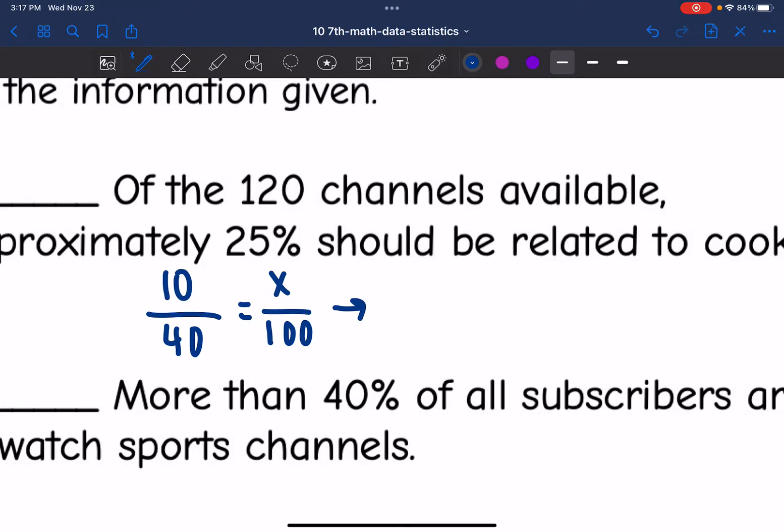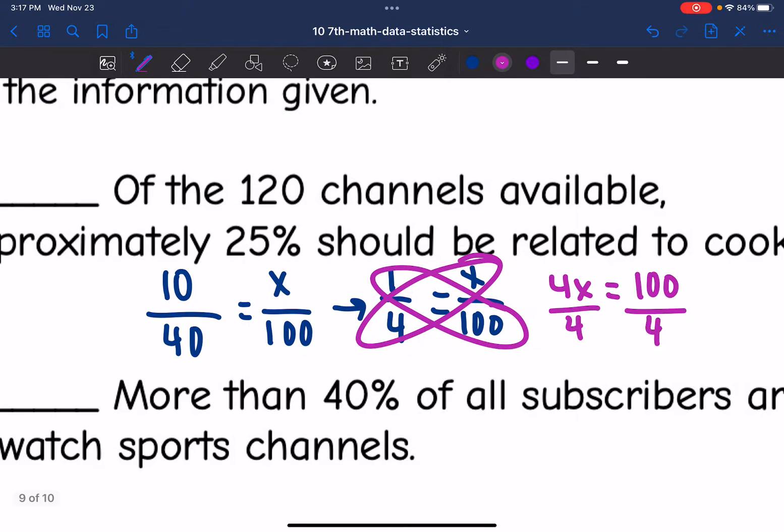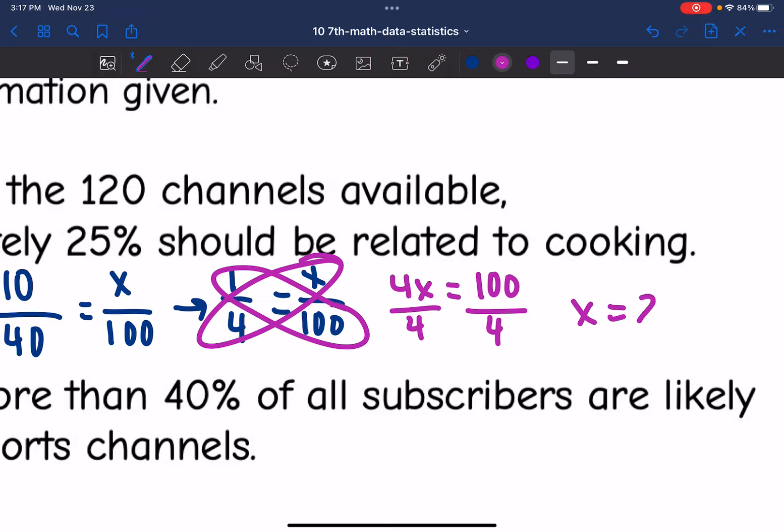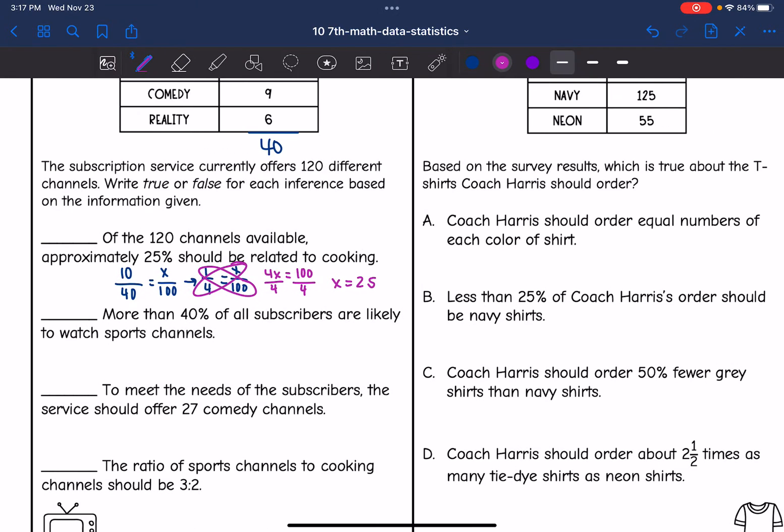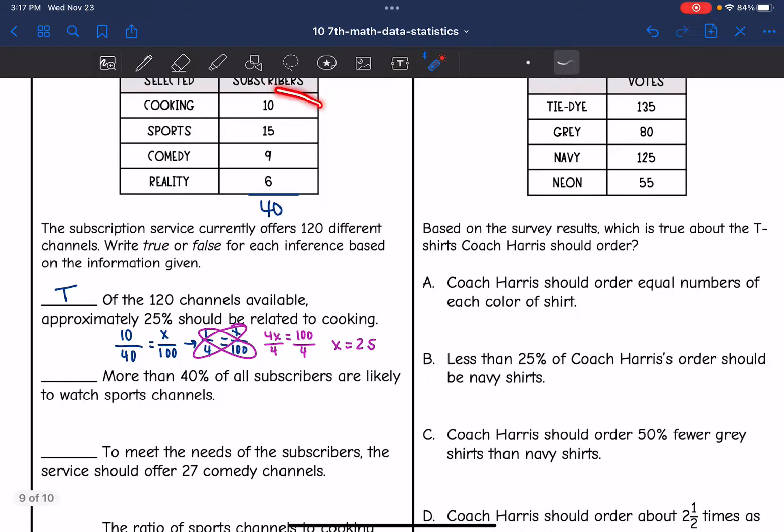So I'm going to simplify 10 over 40 to one fourth. And then when I cross multiply, I get 4x equals 1 times 100, which is 100. And then I would divide by 4 and I get that x equals 25. So the 25% matches the sample that they collected. So I would put that as true. 25% said cooking.